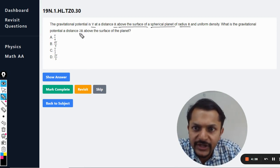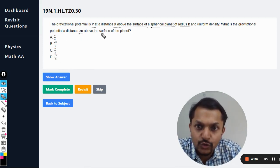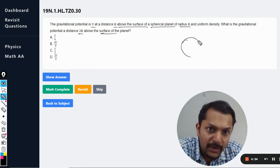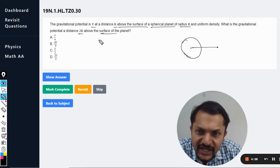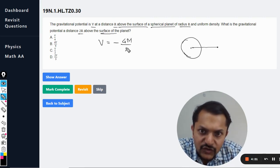My dear students, this is just a game of words. This distance is r and this is also r. So in the first case, the potential is given by negative GM divided by small r, and this small r is 2 capital R.